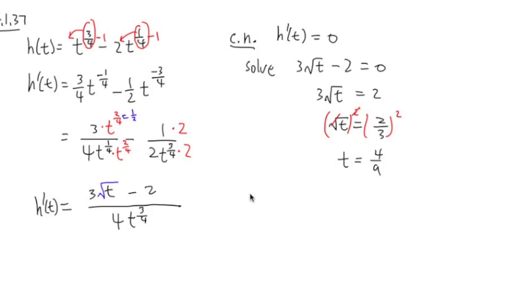And there's also another situation for the critical number. Another situation is where the derivative does not exist. And now, once again, our equation here is a fraction. If you set the numerator equal to 0, the whole thing will be 0. For a fraction to be doesn't exist, undefined, you set the bottom to be 0. So for this situation, we will have to solve the denominator, which is 4t to the 3 over 4 power, equal to 0.